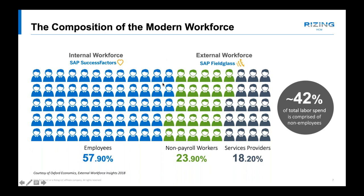The drive to retain market share and break new ground in the digital economy has stoked companies' appetite for talent and new capabilities. To meet these demands in an agile way, organizations are looking beyond their employee population. They increasingly turn to the external workforce, which includes non-payroll or contingent workers and service providers. There are three large categories in total workforce composition: internal employees on the company's payroll, non-payroll or contingent workers engaged via staffing agencies, freelancer marketplaces, or directly — such as independent contractors, freelancers, alumni, and temporary labor.